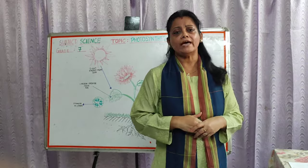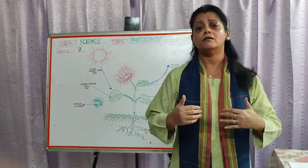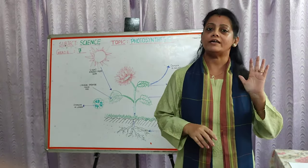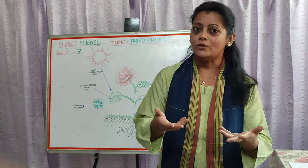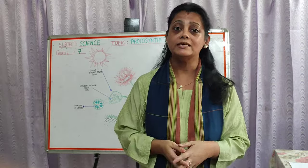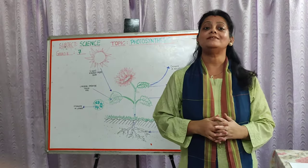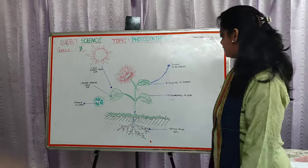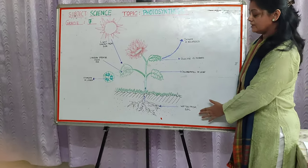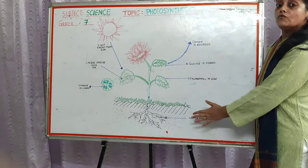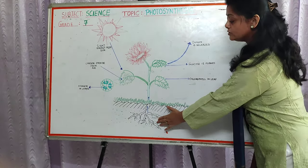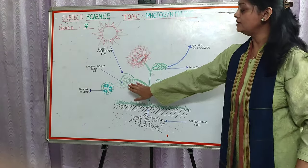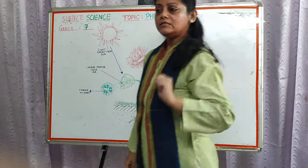Do plants require raw materials? Like if we have to make aloo ka paratha, we require raw materials — the potatoes, the aata, and the fire to cook. So plants also require raw materials. The first raw material required is water. Where do they get water? They get water from the soil. Water from the soil is absorbed by the roots of the plants, and through the stems it is distributed to all parts of the plant, including the leaves.